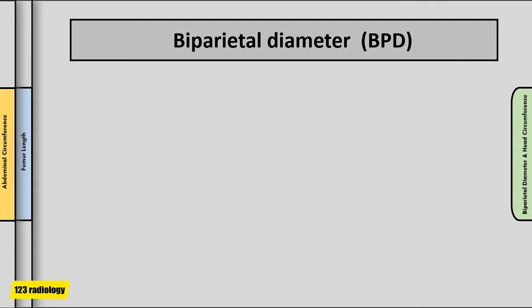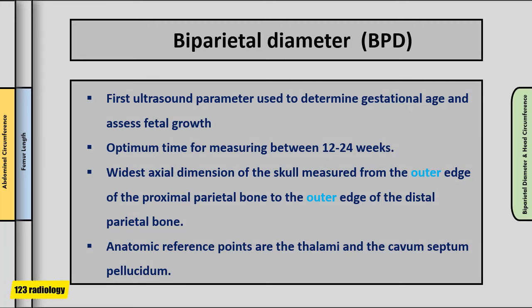Head measurements include biparietal diameter and head circumference. Biparietal diameter was the first ultrasound parameter used to determine gestational age and assess fetal growth; the optimum time for measuring it is between gestational weeks 12 and 24. Biparietal diameter is the widest axial dimension of the skull, measured from the outer edge of the proximal parietal bone to the outer edge of the distal parietal bone. The anatomic reference points are the thalami and the cavum septum pellucidum.